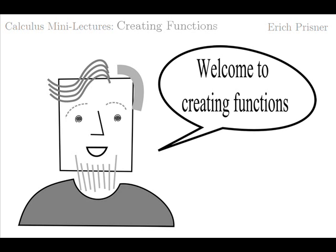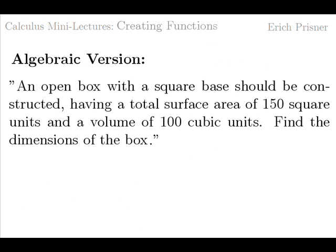Consider the following word problem. An open box with a square base should be constructed, having a total surface area of 150 square units and a volume of 100 cubic units. Find the dimensions of the box.